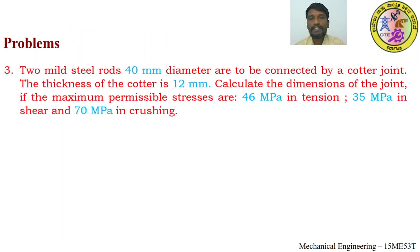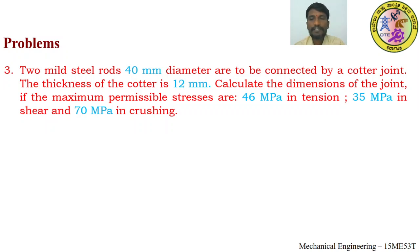Problem 3: Two mild steel rods of 40 millimeter diameter are to be connected by a cotter joint. The thickness of the cotter is 12 millimeter. Calculate the dimensions of the joint if the maximum permissible stresses are 46 MPa in tension, 35 MPa in shear, and 70 MPa in crushing. The diameter of the cotter joint and the thickness of the cotter are given, and based on the stresses provided we have to calculate the different parameters of the cotter joint.